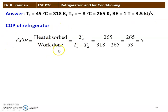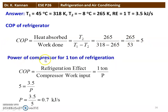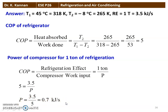COP of the refrigerator = heat absorbed / work done = T2 / (T1 − T2) = 265 / (318 − 265) = 265 / 53 = 5. For 1 ton of refrigeration, COP = refrigeration effect / power. So 5 = 3.5 / P, which gives P = 3.5 / 5 = 0.7 kW. The power required to drive the compressor is 0.7 kilowatt.